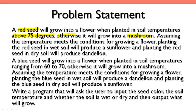Assuming that the temperature meets the conditions for growing a flower, planting the red seed in wet soil will produce a sunflower, and planting the red seed in dry soil is going to produce a dandelion. That's really the main pieces of information from the first paragraph, and being able to pick that out is fairly important.